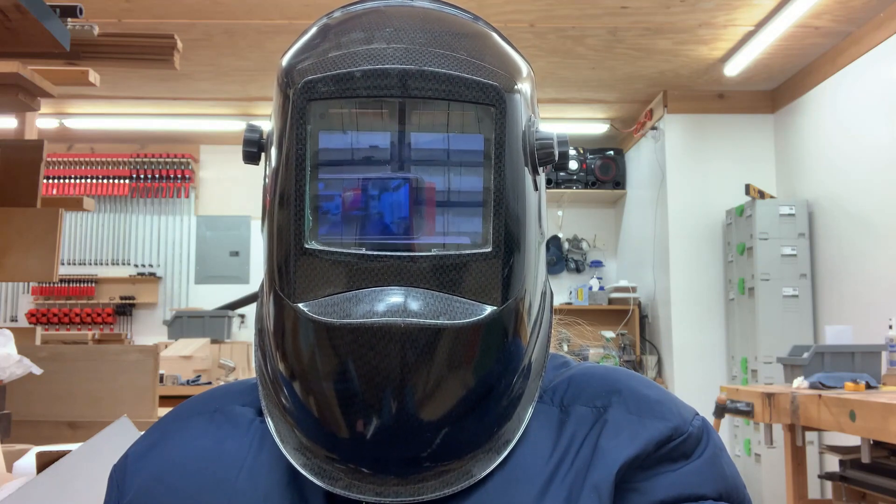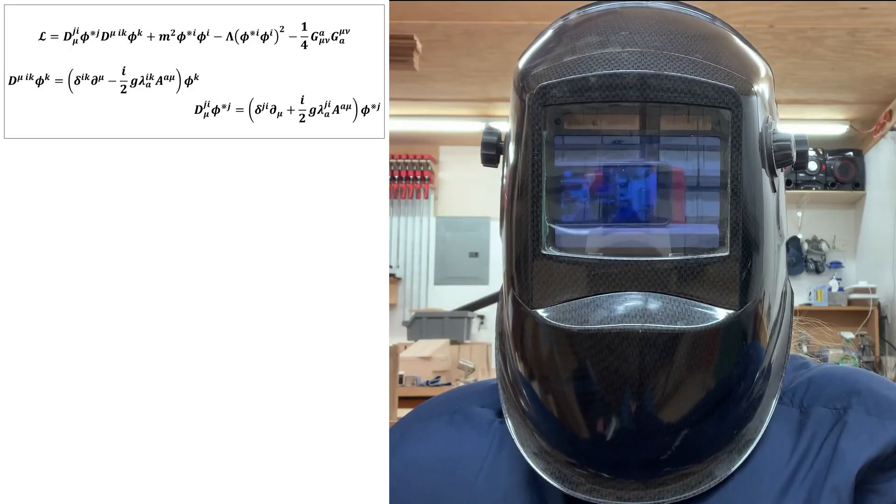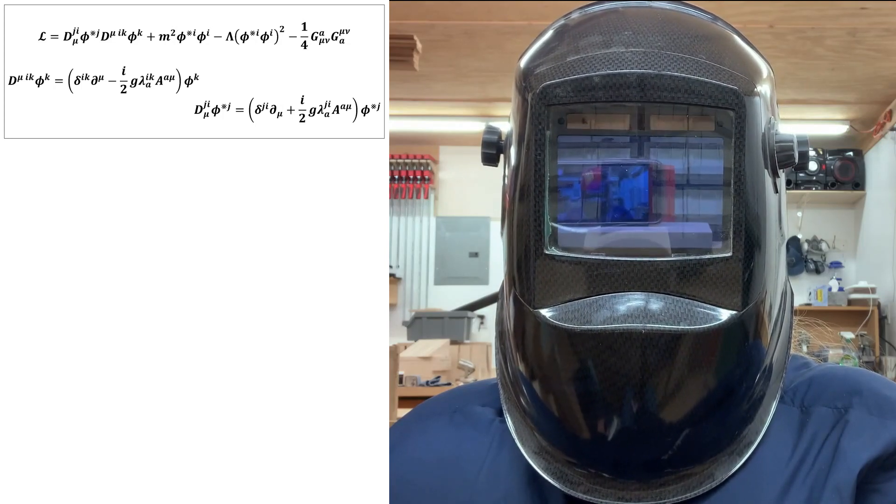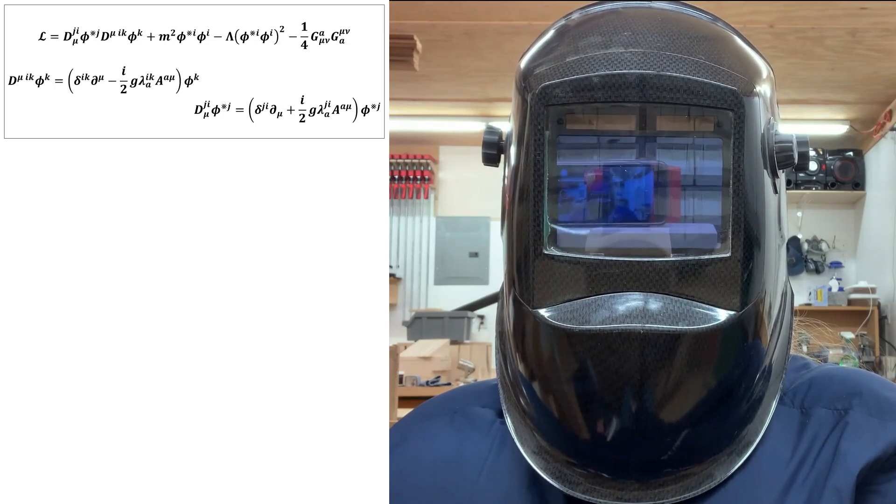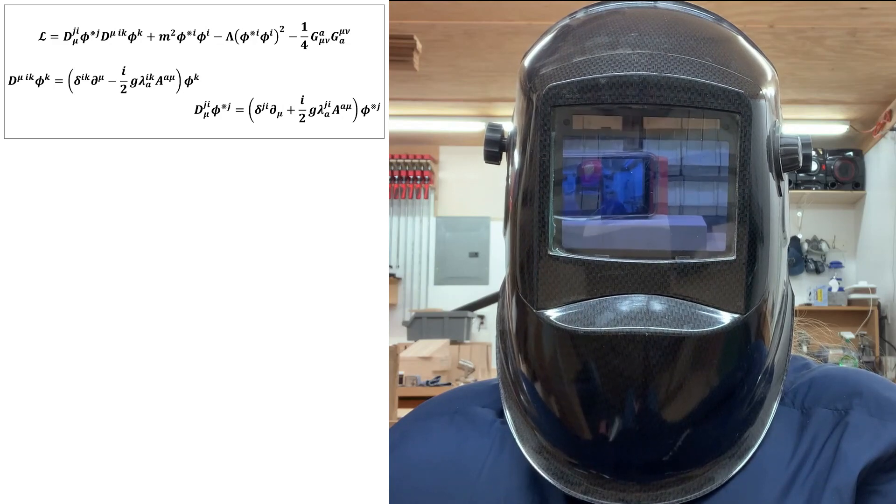The required Lagrangian density is, of course, this. Note that because I'm writing everything in index notation, I didn't need to use the Hermitian conjugate dagger in writing the Lagrangian.